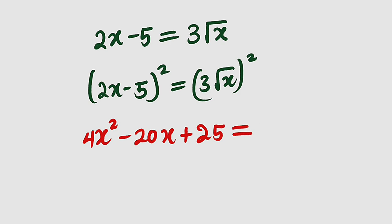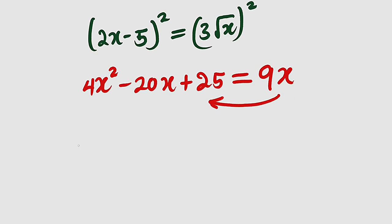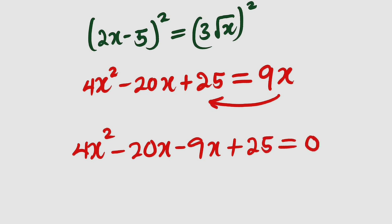We move to the other side. 3 squared is 9, and root x squared is just x. Now we are free to bring this one in. So this is 4x squared minus 20x. As this comes to the other side, it becomes negative 9x, then plus 25, the whole of this equal to 0.